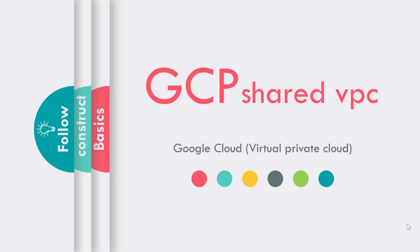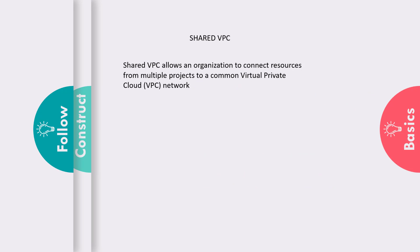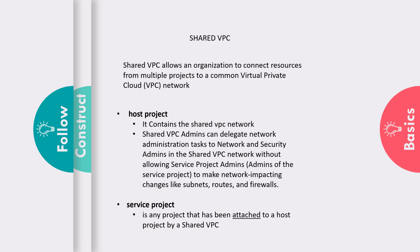This is a lecture on shared VPC. A shared VPC allows an organization to connect resources from multiple projects to a common centralized virtual private cloud network. It has two major components: the host project and the service project. The host project contains the shared VPC network and can have admins who can delegate network administration to themselves or to a separate network admin.